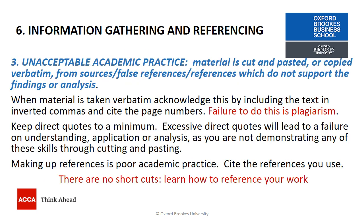The third reason why criteria 6 may be a fail is to do with unacceptable academic practice. The main reason here is cut and pasting of materials. When material is taken verbatim, acknowledge this by including the text in inverted commas and cite the page numbers. Failure to do this is called plagiarism, which is a serious academic conduct issue. Keep your direct quotes to a minimum — excessive direct quotes will lead to failure of understanding, application or analysis, meaning failures in Criterias 1, 2 and 3, because you're not demonstrating any of these skills through cutting and pasting. Making up references is also poor academic practice, so cite the references you use. There are no shortcuts — just learn how to reference, and if you learn how to reference at the beginning, it will make your whole journey much easier.